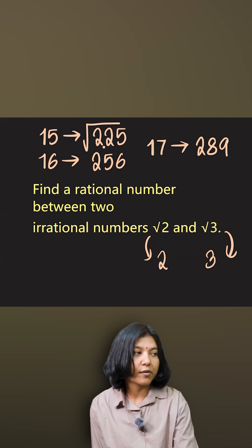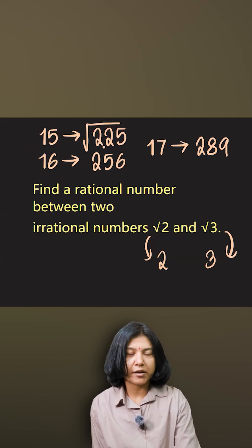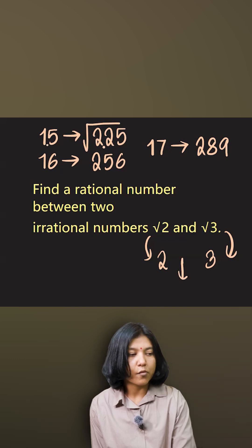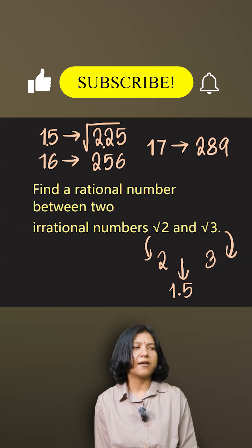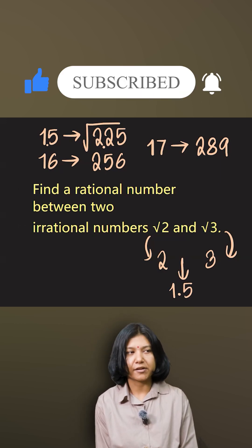The square root is 15 for 225, then for 2.25 it has to be 1.5. So hence 1.5, 1.6, 1.7—either of them can be a rational number lying between √2 and √3.